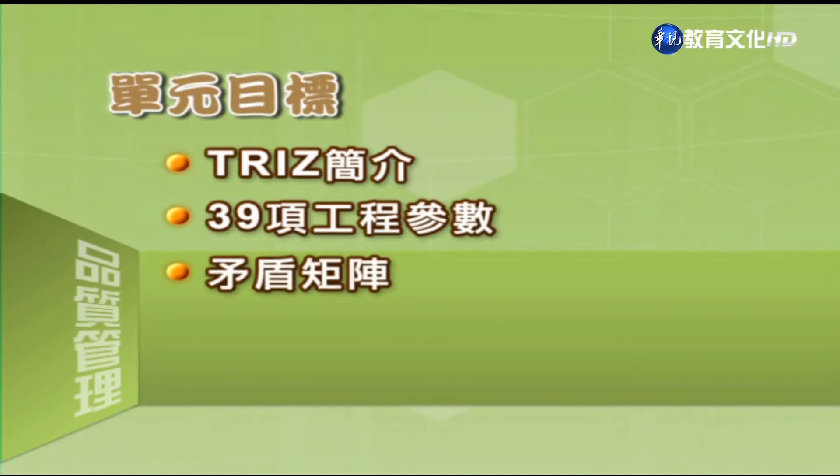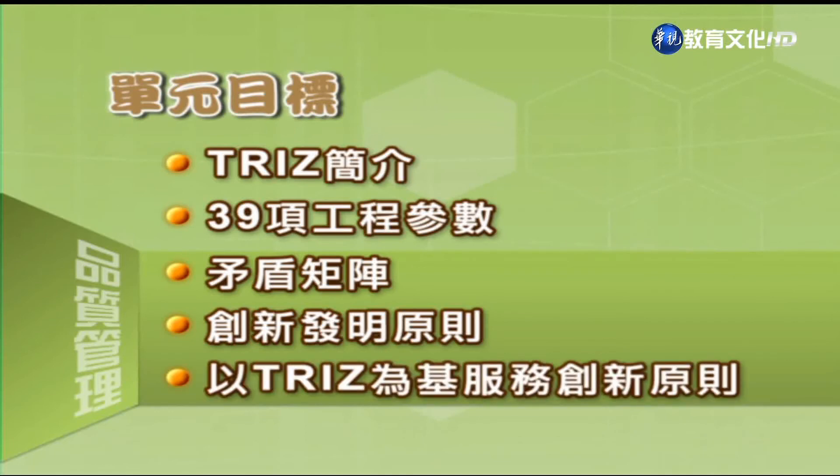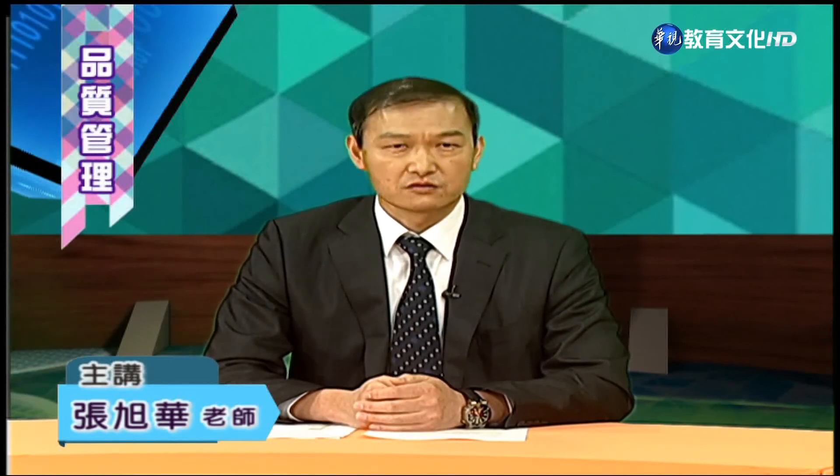学习目标包含了39项工程参数、矛盾矩阵、创新发明原则，以及以TRIZ为基的服务创新原则。研发所常面临的问题是，当试图要改善一项产品或工程特性的时候，却导致了另外一个工程特性或产品的恶化。传统的方法是用妥协或取舍（trade-off）的方式来处理，而TRIZ则是利用消除的方法。